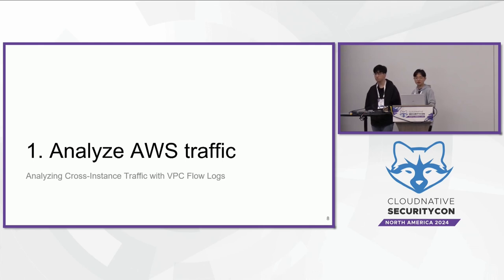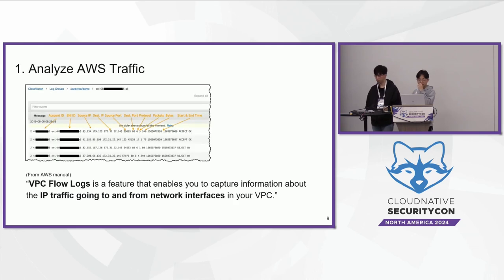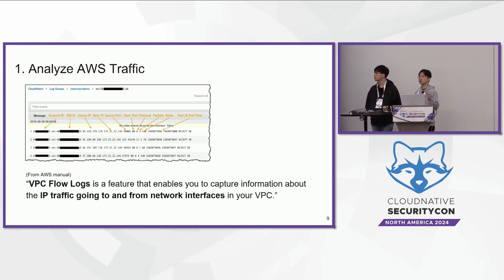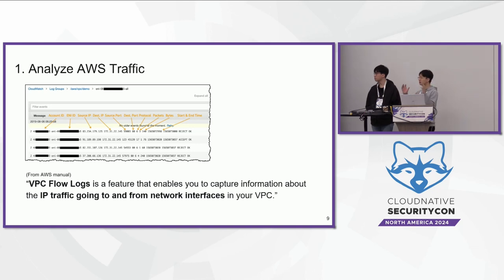The first thing is analyzing AWS traffic. AWS has a feature called VPC Flow Logs that enables users to capture information about IP traffic going to and from network interfaces in their VPC. If you want to capture all traffic among your VPCs, you need to enable VPC Flow Logs for every VPC.